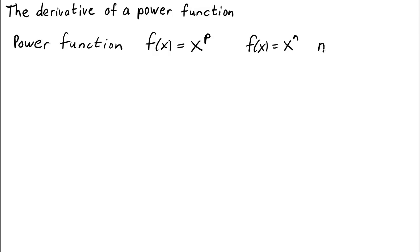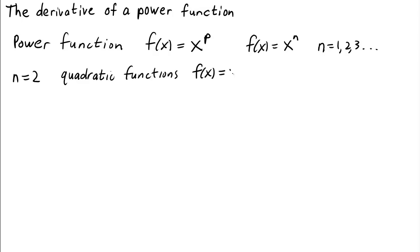So let's let n equal 1, 2, 3, and so on. When n equals 2, we have quadratic functions — f(x) = x squared. We've already calculated that the derivative f'(x) for a quadratic is just 2 times x. Let's look at the calculation behind this to see if it will give us insight into what to do when n is an integer other than 2.